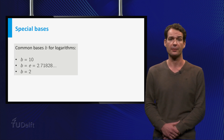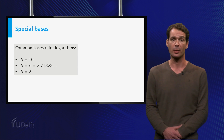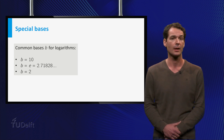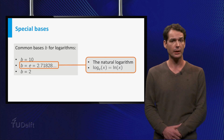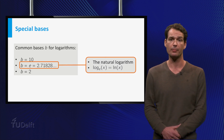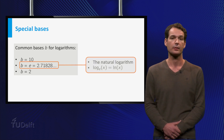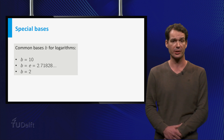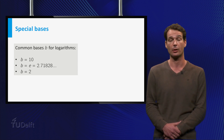Although logarithms can be defined for any base b greater than 1, the numbers 10 and e are the most common bases. If the base of the logarithm is the number e, we call it the natural logarithm and we use the notation ln. The logarithm in base 2 is also frequently used, especially in computer science, as you saw in the beginning of this video.